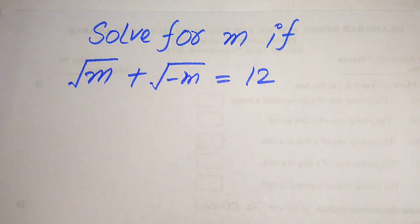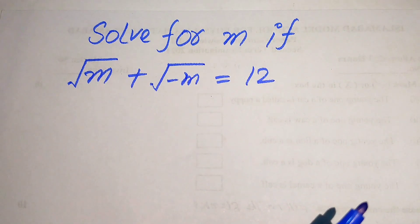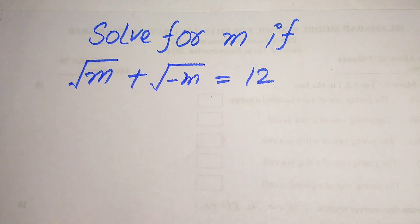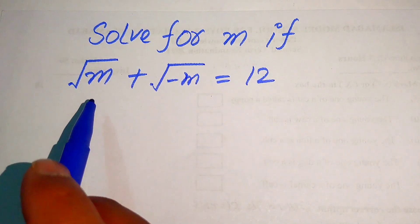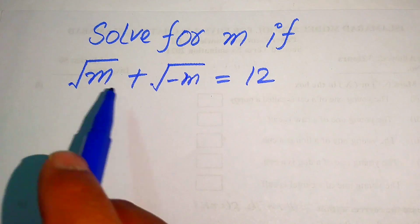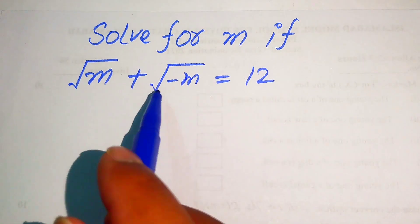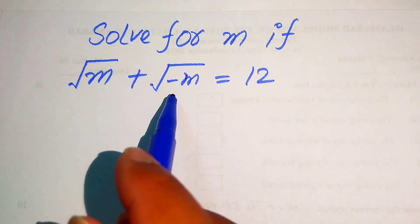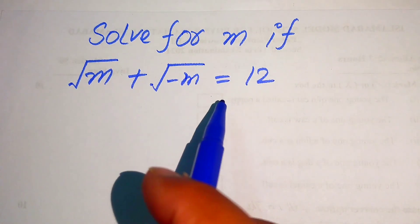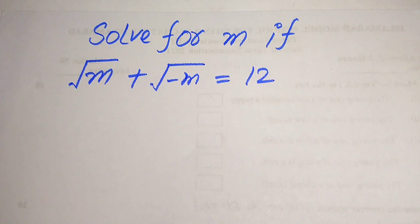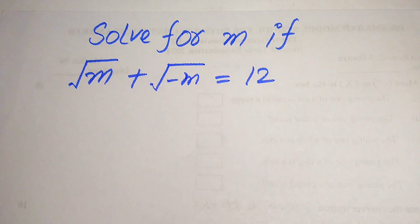Hello everyone. How to solve this problem: for the values of m, if we have square root of m plus square root of minus m equals to 12, and we can find all the values of m here.